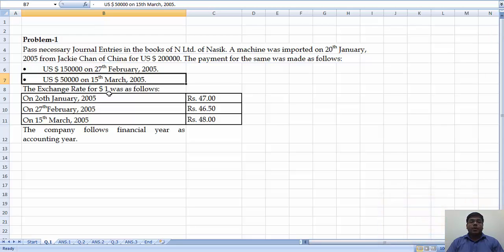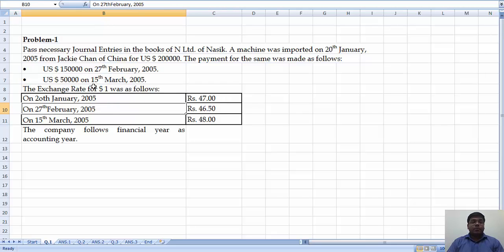The exchange rate for dollar 1 was as follows. When we imported on that day, that is on 28th January 2005, the rate was rupees 47. But when we make the payment on 27th February for 1 lakh 50 thousand, the rate has gone 46.50